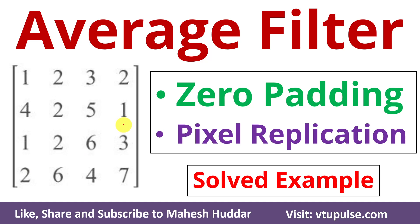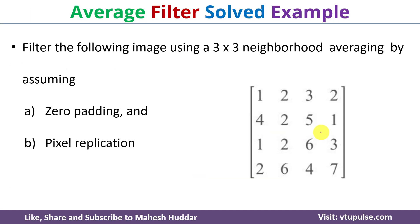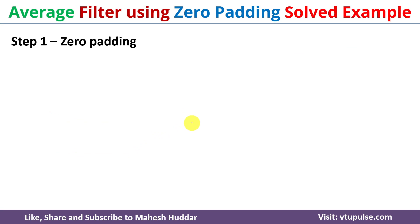Welcome back. In this video I will discuss what is average filtering in digital image processing with the help of a simple solved example by doing zero padding and pixel replication. Here we filter the following image using a three cross three neighborhood averaging by assuming zero padding and pixel replication. First we will consider zero padding.